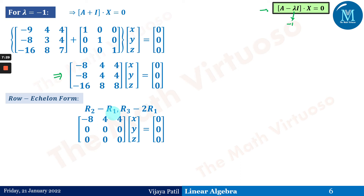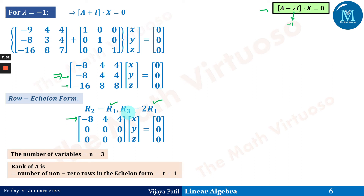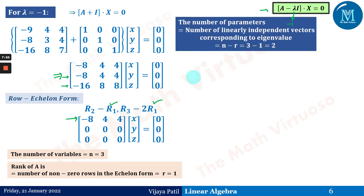Again using R1 to zero out R2 and R3 in one step reduces the matrix to echelon form with only one non-zero row, giving rank r = 1. Therefore the number of linearly independent eigenvectors for λ = −1 is n − r = 3 − 1 = 2.